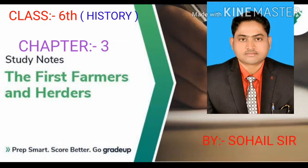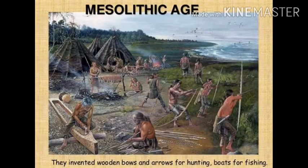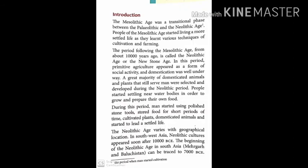Let's start Chapter Number 3 — 'The First Farmers and Herders.' The first topic is Introduction. The Mesolithic Age was the transitional phase between the Paleolithic and the Neolithic Age — that is, between the Purva Pashan Kaal and the Nava Pashan Kaal. This middle phase is called the Mesolithic Age, and this is the period in which changes began to occur.